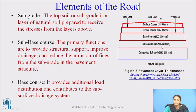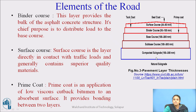The next course is the base course, made up of materials like gravels, aggregates, and sand. It provides additional load distribution and contributes to the subsurface drainage system. Next is the binder course — the layer that provides the bulk of the asphalt concrete structure. It consists of thin layers of asphalt concrete to distribute the load on the base course.